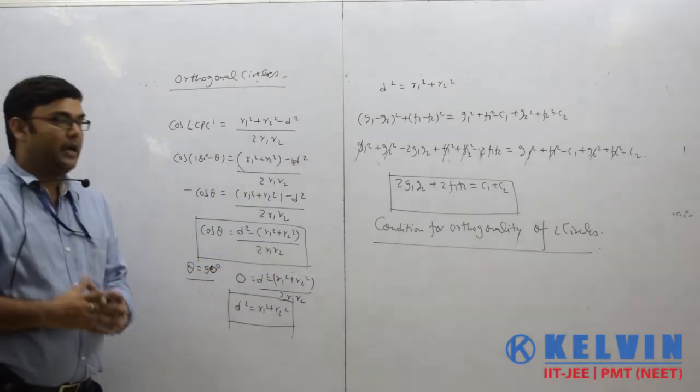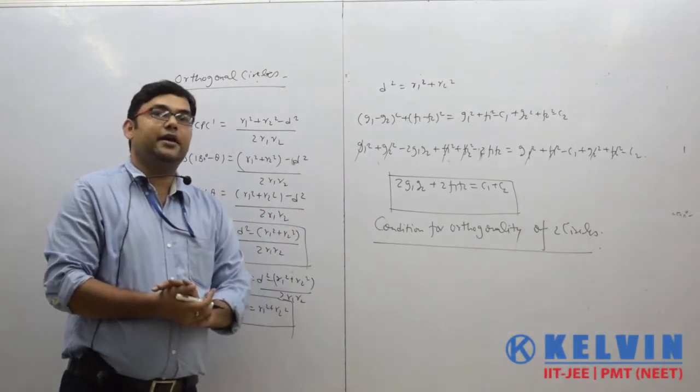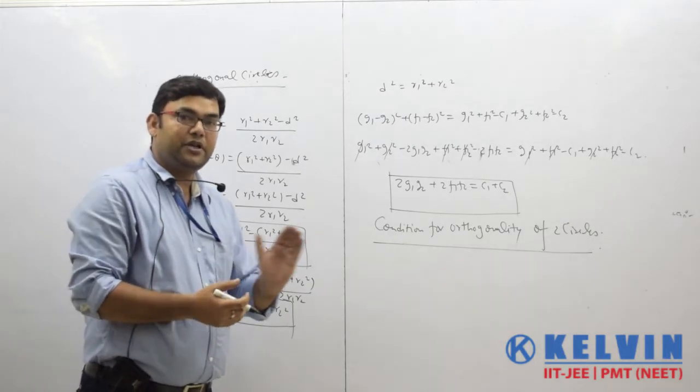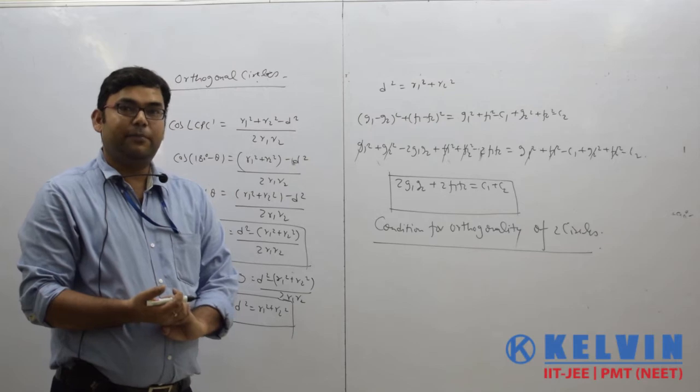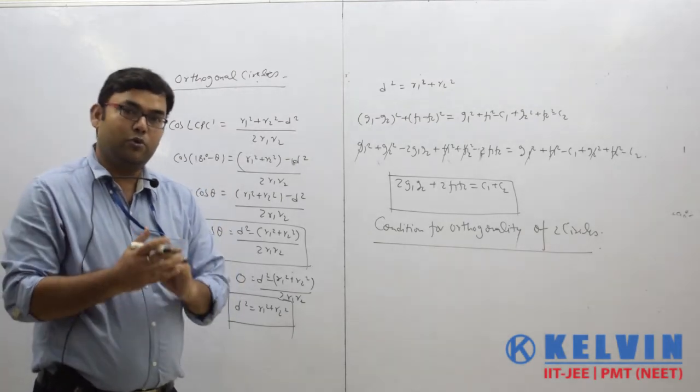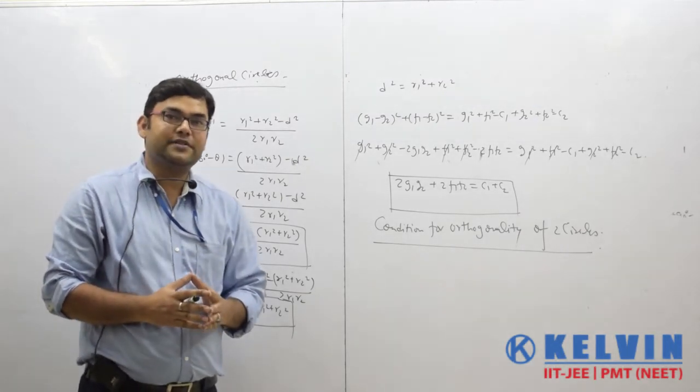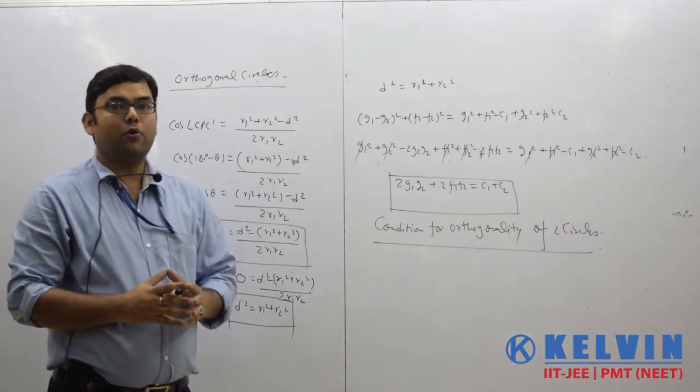At the main level, you'll get questions in this pattern, so remember this condition: 2g₁g₂ plus 2f₁f₂ equals c₁ plus c₂. This is the concept of orthogonal circles and the condition for orthogonality.